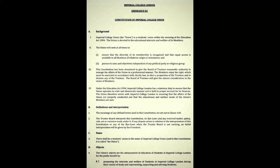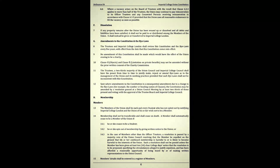The constitution states: 'There shall be a students' union in the name of Imperial College Union' — but it is not the only union they're referring to in this document. That's the word game there. 'The Union's objects are the advancement of education of students at Imperial College London for the public benefit, by promoting the interests and welfare of students during their course of study, and representing, supporting, and advising students.'